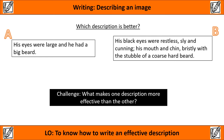However, if we look at B, we have black eyes that were restless, sly and cunning, his mouth and chin bristly with the stubble of a coarse, hard beard. Already as a reader I'm beginning to see a very specific character type, and it's clear that in B the writer had the effect he wanted to create very clearly in his mind before he began to add the details in.